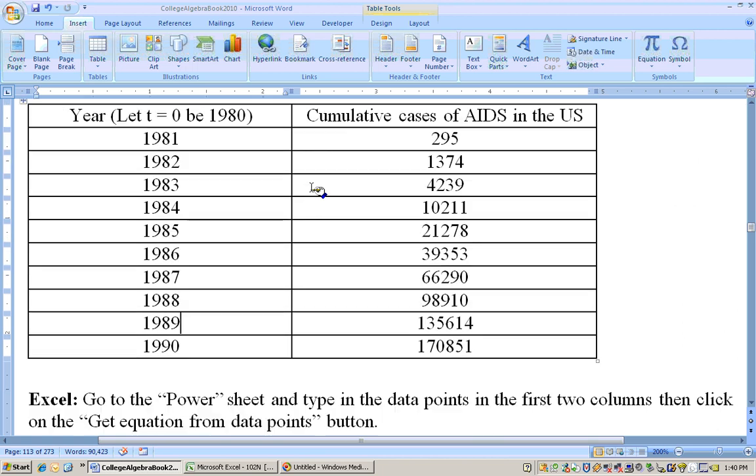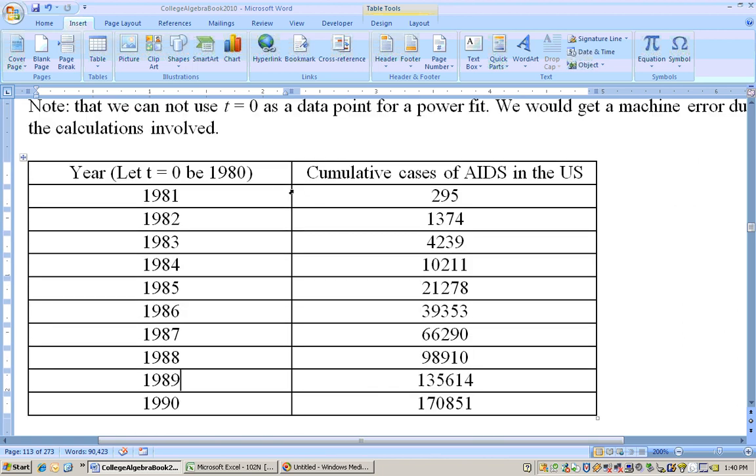So what we have here is data points that we're going to use to find a power function of best fit for the cumulative cases of AIDS, and we have t equals zero as the year 1980, so this is 1981 through 1990, so this would be year one through year ten, so the x would be one through ten, and these would be my y values.